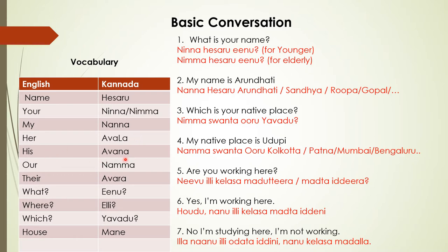His means Avana. Avala Hesaru Enu means 'What is her name?' — that's how it goes. Avar or Namma — if you know words, like house is called Mane, you can say Namma Mane, Namma Naai (dog), Namma Kudure (horse), Namma Appa (my father), Namma Amma or Namma Tai (my mother). Their house is Avar Mane. Try to combine words. Next video I will give you more words so you can start making short sentences.